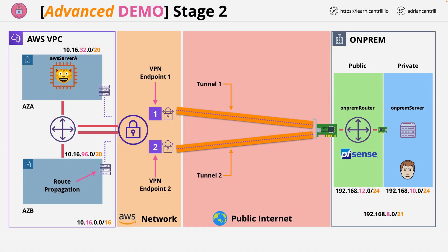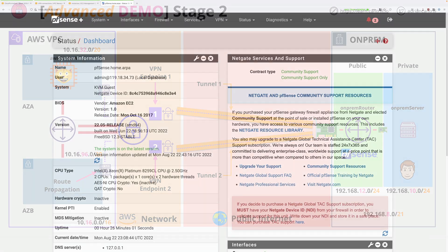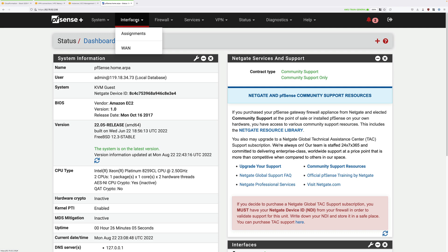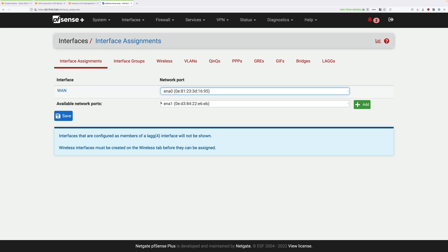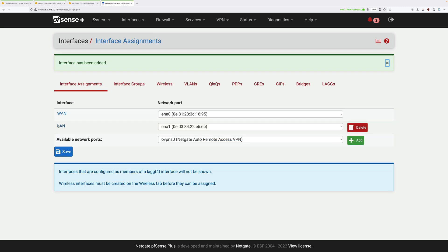Now we're going to implement this architecture. Notice how the PFSense router has two network interfaces. It has an interface on the left side which is the WAN interface — this is the interface that the VPN connection will connect into. It also has another interface on the right side which is the LAN interface. We need to configure the LAN side interface, so click on interfaces at the top and then click on assignments. It will detect that there's another available network port, so go ahead and click on add, and that will add this as the LAN interface.